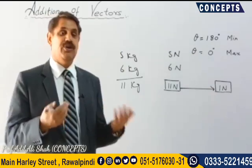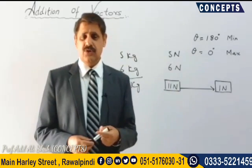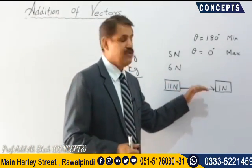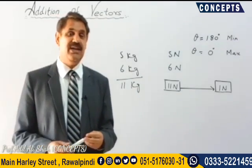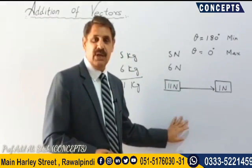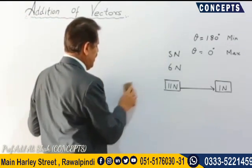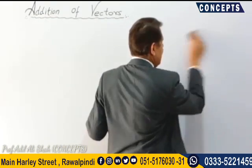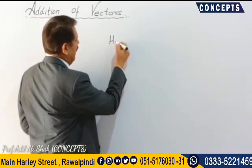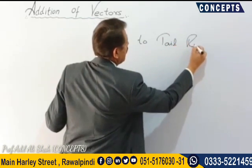To find the resultant vector, we have two methods: one is the graphical method and the other is the analytical method. Today we will be discussing addition of vectors by the graphical method, specifically the head-to-tail rule.